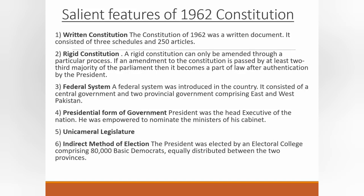The salient features of the 1962 constitution: Number one — written constitution. The constitution of 1962 was a written document consisting of 3 schedules and 250 articles. Number two — rigid constitution, meaning the constitution can only be amended through a particular process. An amendment must be passed by at least a two-thirds majority of parliament, and then authenticated by the president to become law. Number three — federal system: a federal system was introduced consisting of the central government and two provincial governments comprising East and West Pakistan.